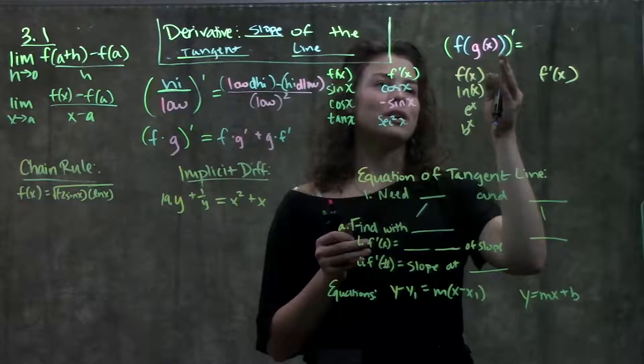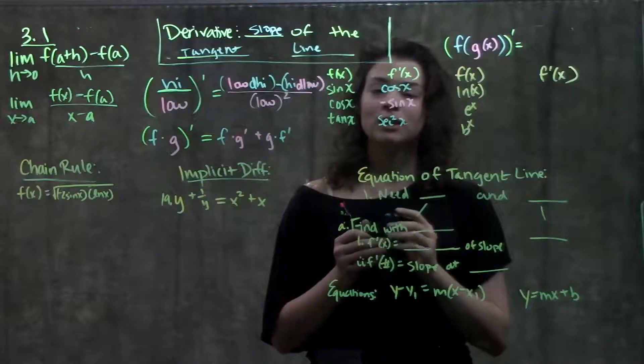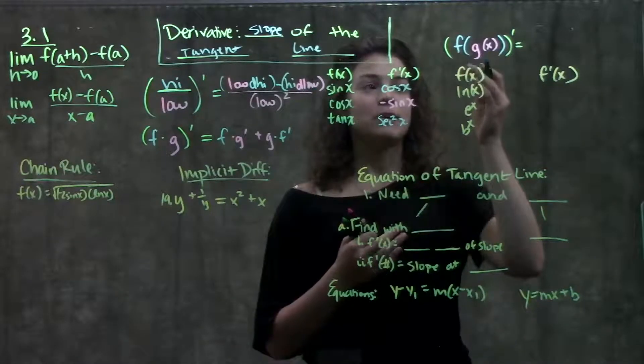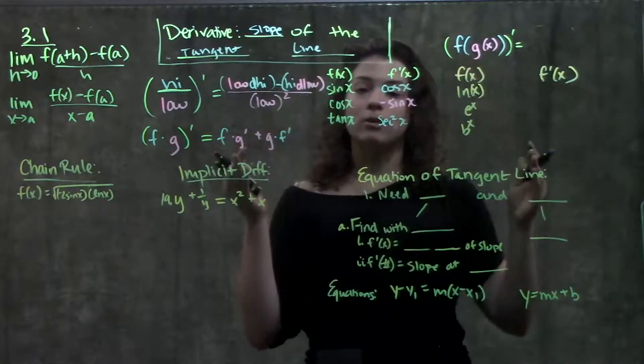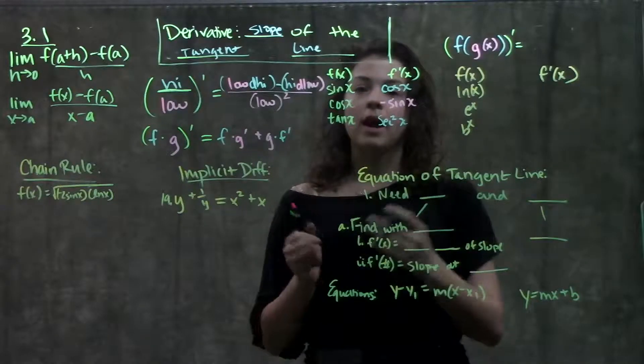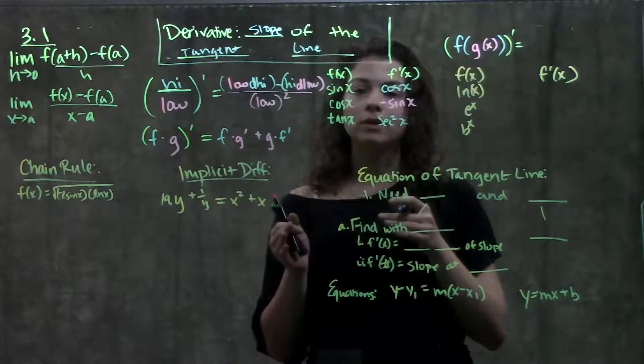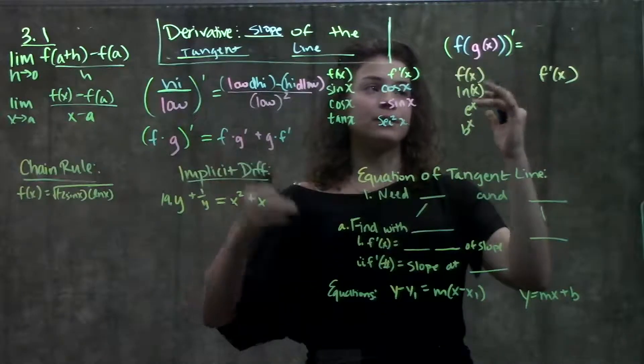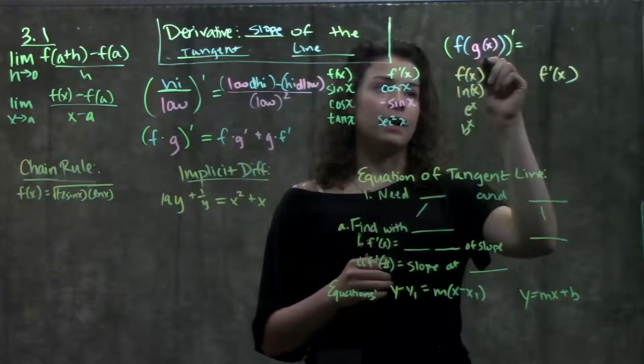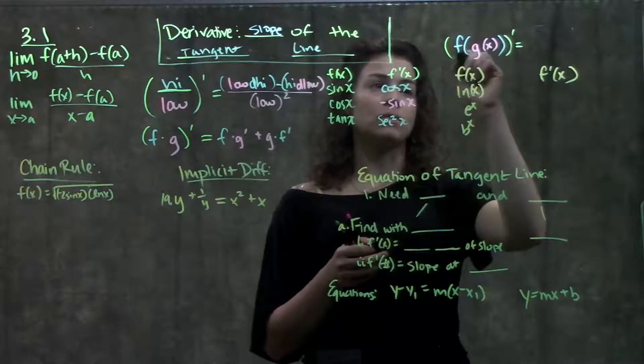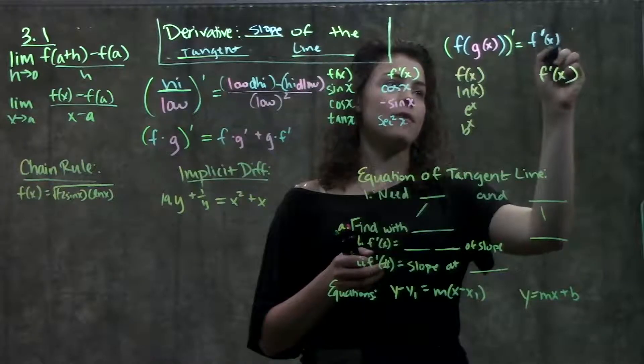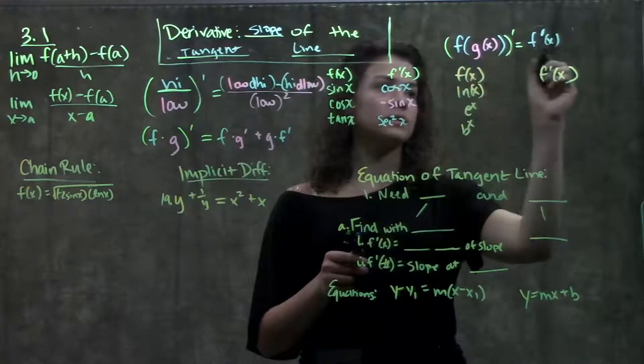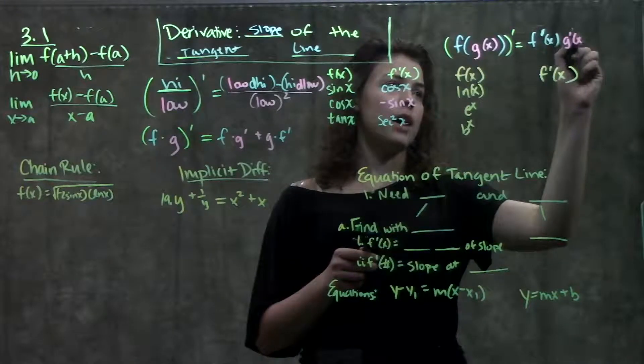We also learned about chain rule. Chain rule is if we have a function within a function. How do we take the derivative of that? Chain rule tells us to start with the outermost function, take that derivative, and then work our way inside, and multiply by each inner function derivative. So if I have f on my outside, I have f of g of x, taking the derivative. I'll start with my outside function and take derivative of f of x, times, moving on to my inside function, g of x, times the derivative of g of x.